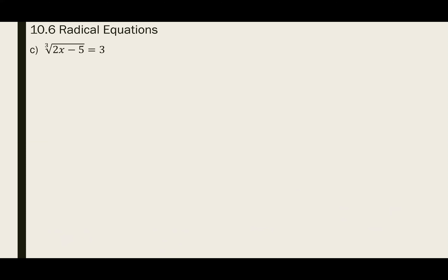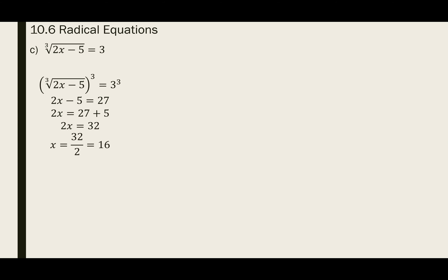This problem is actually easier than it looks. Even though it's to the third power, to get rid of the cube root all we need to do is raise it to the third power. The cube root and the third power cancel out. 3 times 3 times 3 is 27. We add 5 over and then divide by 2, so x = 16.